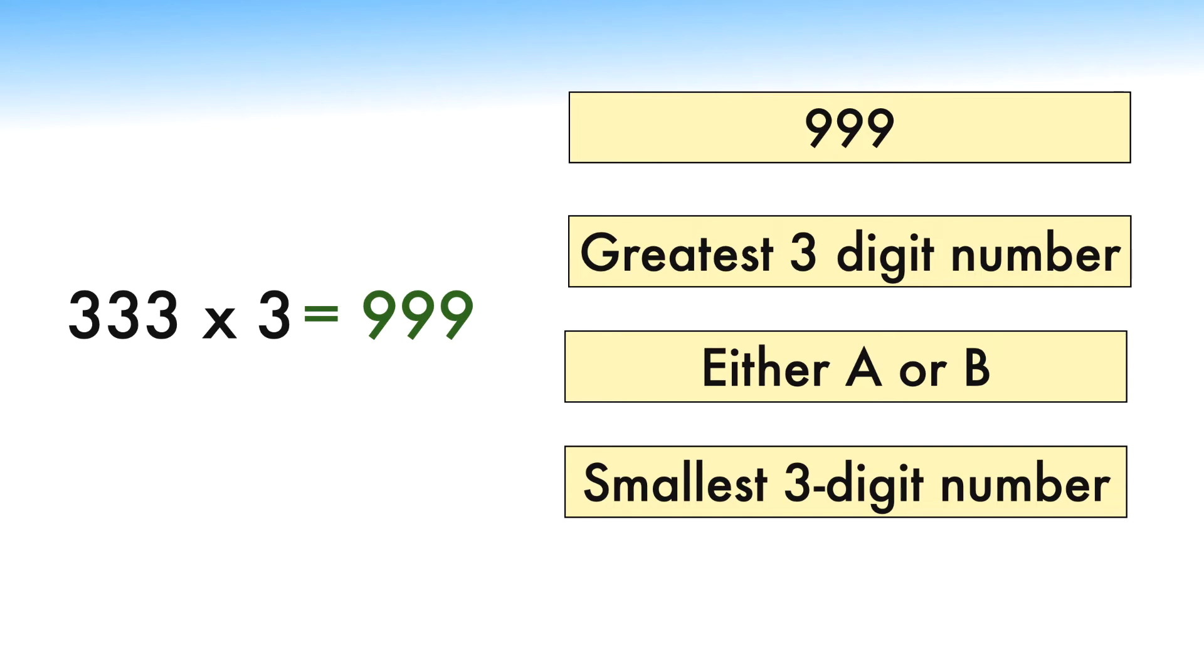Let's tally our answer with the given options. The first option A is 999, which matches with our answer. Hence, option A is correct. The second option B says the largest 3-digit number, which is 999. And the answer we obtained is 999 too. Hence, option B is correct too.